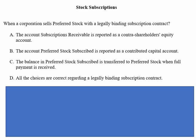When a corporation sells preferred stock with a legally binding subscription contract — A, the account subscriptions receivable is reported as a contra-shareholder's equity account; B, the account preferred stock subscribed is reported as a contributed capital account;